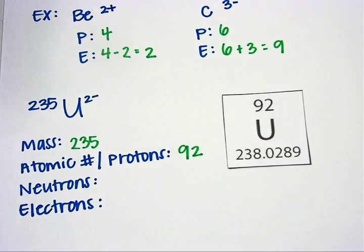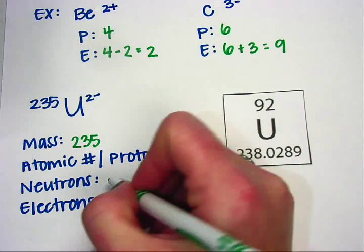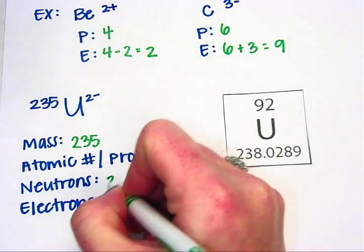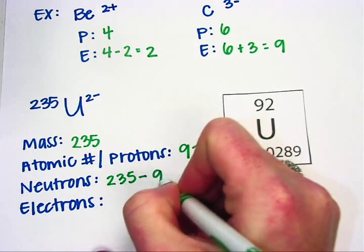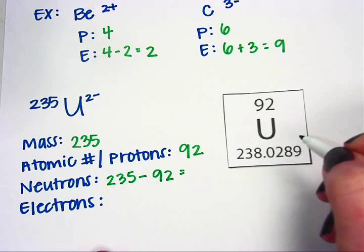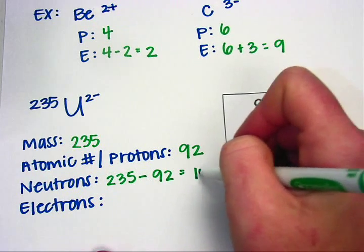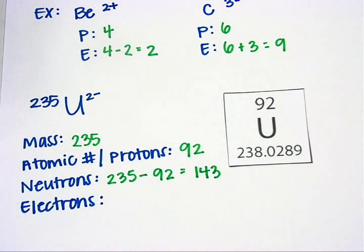The number of neutrons, I'm going to have to do some math to figure out. I'll take the mass of 235 and subtract the number of protons, 92. That gives me 143 neutrons.